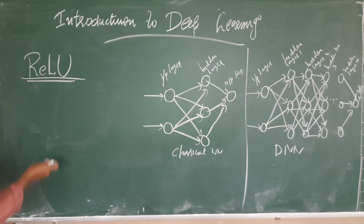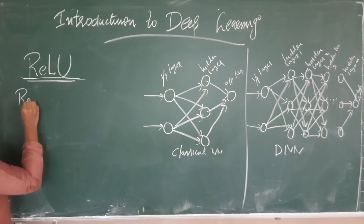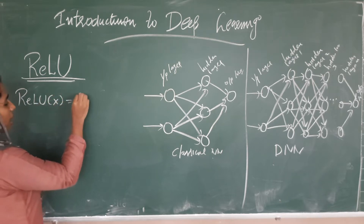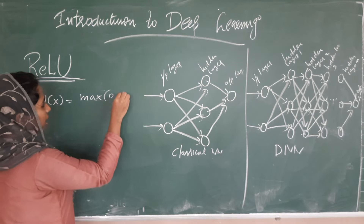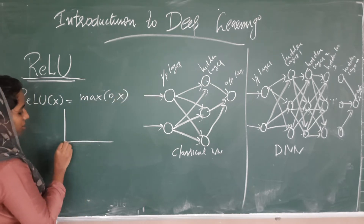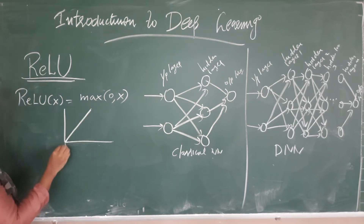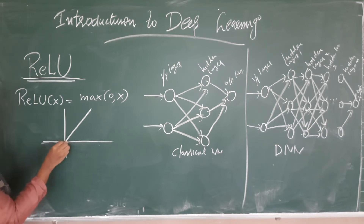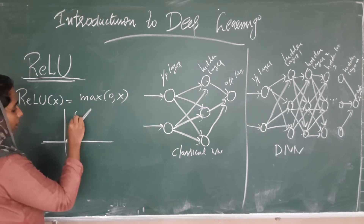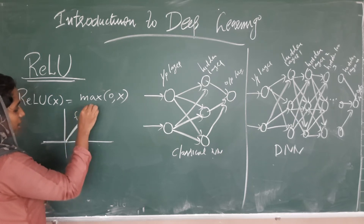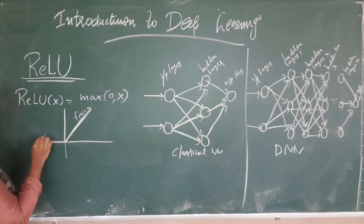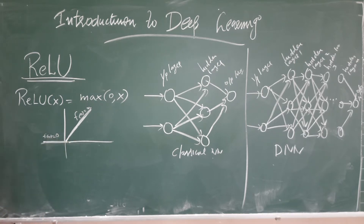That is why we use ReLU. ReLU of a variable x is defined as the maximum of 0 and x: if the input is greater than 0, the output is x itself; if the input is less than or equal to 0, the output is 0. There are two problems associated with ReLU. One problem is that all negative values are mapped to 0 without any consideration, giving all values less than 0 the same importance as 0, which is not ideal in some cases.